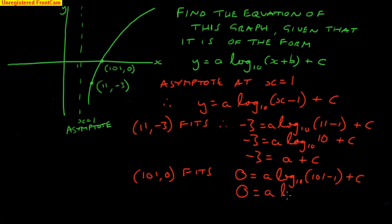0 equals a log to base 10 of 100 plus c. Log to base 10 of 100 is just 2 because 10 to the power 2 would give me 100. So we get 0 equals 2a plus c. I've generated my two equations by substituting the two points in. If I just give them labels, that one is equation 1, that one is equation 2.